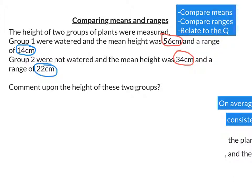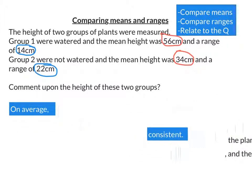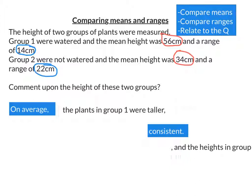So that means that group two has less consistent measurements. So let's look at that structure we talked about before. We always start with on average and finish with consistent. So on average, the plants in group one were taller, their mean is larger, and the heights in group two were less consistent as the range was bigger.